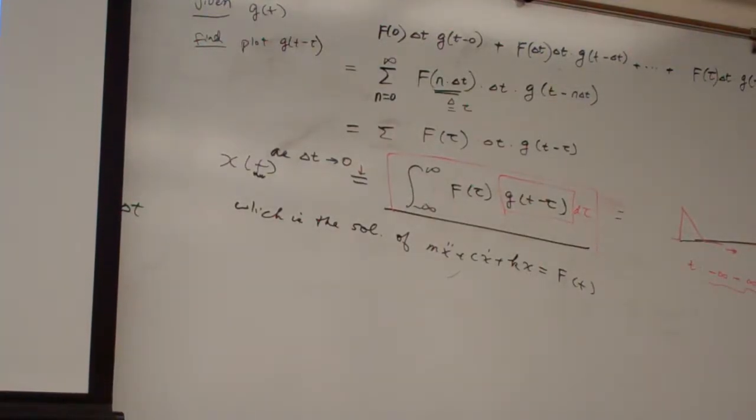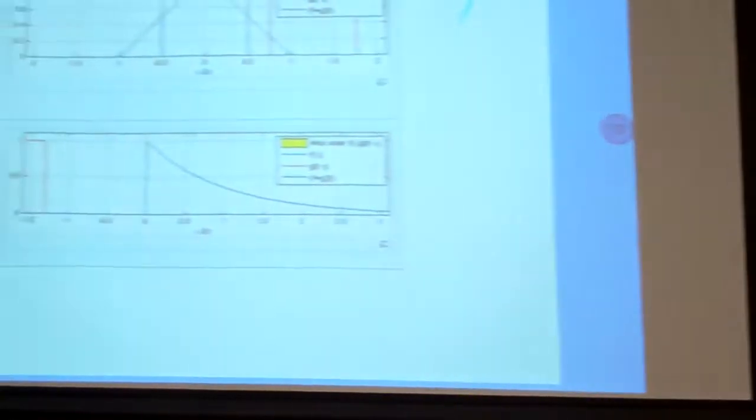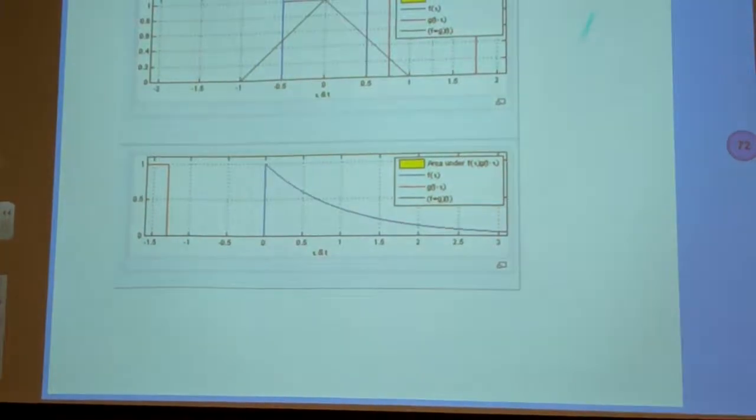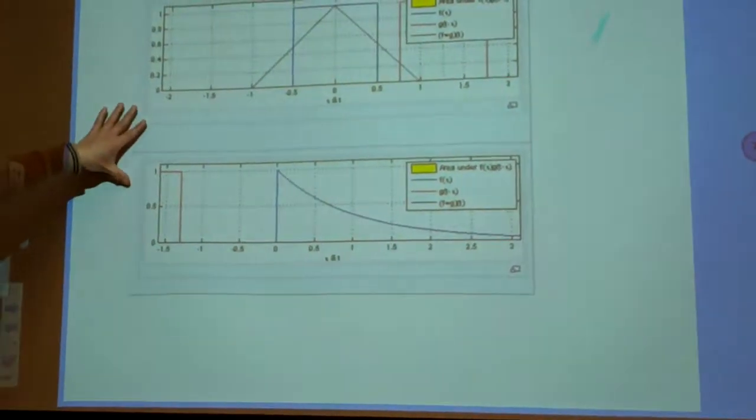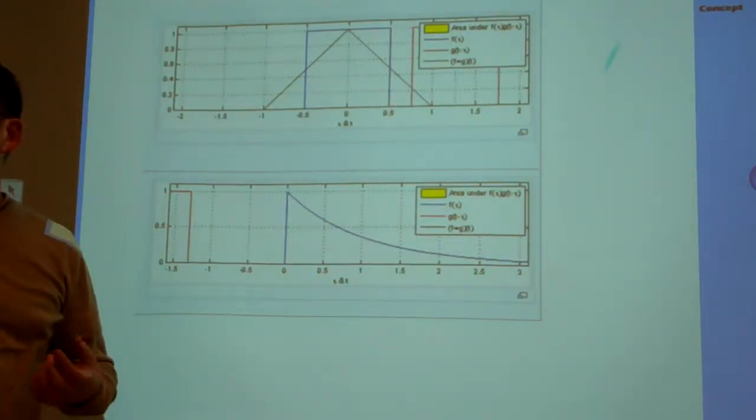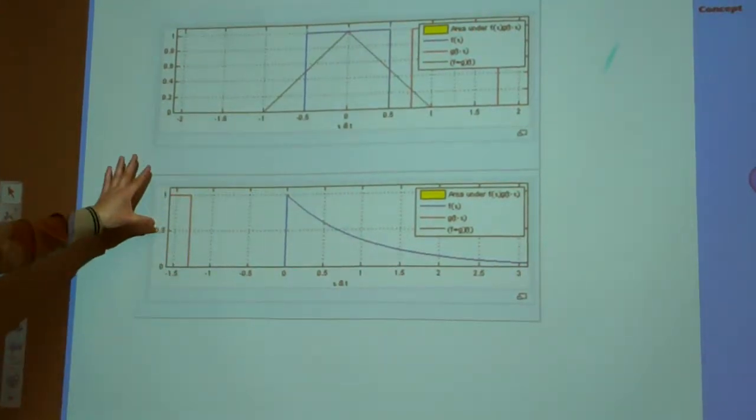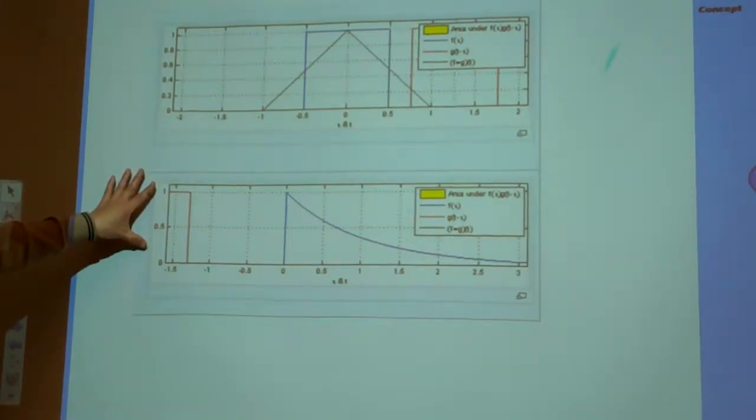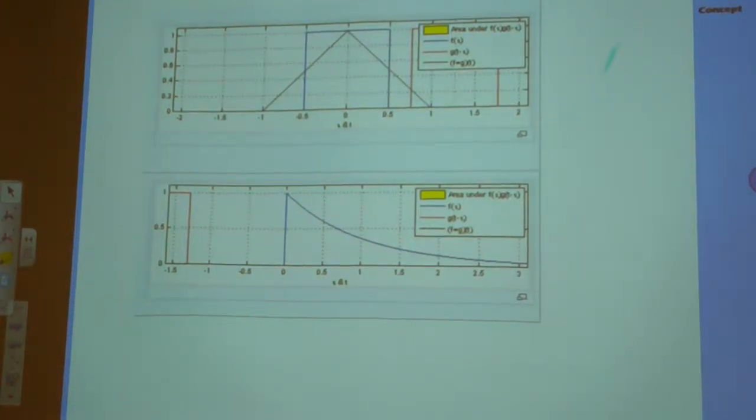So this representing is a graphical, this graphical representation. And again, this graph I picked up from Wikipedia. If you go to convolutional integral using the keyword, and go to Wikipedia, you should be able to watch this movie again. So that is a concept for convolutional integral.